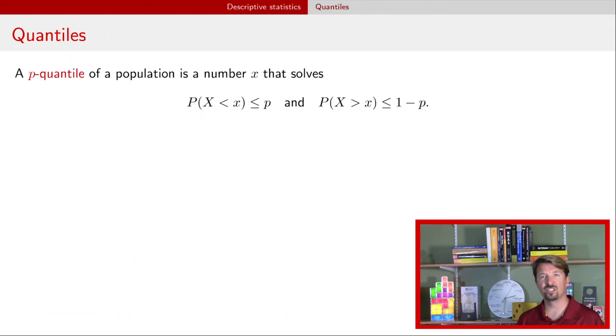All right, the next one on the list is quantiles. You might have heard of quantiles before, but a quantile is just a number in x, such that the probability of a random variable x being less than that value x is less than or equal to p. And the probability that the random variable x is greater than that value little x is less than or equal to one minus p. And so the intuition here is that that value x just splits the population into a proportion p on one side and a proportion 1 minus p on the other side.